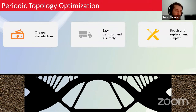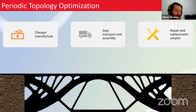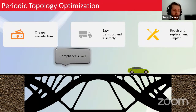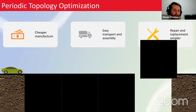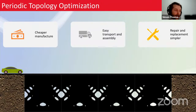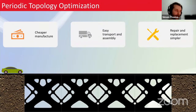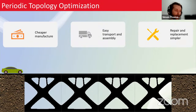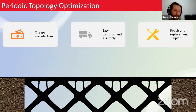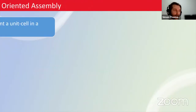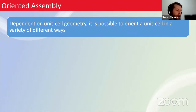Using typical single-component topology optimization, we get a very efficient structure — for example a compliance of one — but it's very difficult to manufacture. So we might use periodic optimization to construct a four-by-one bridge structure, sacrificing some efficiency in return for manufacturing benefits. In this case, compliance is raised to 1.5, but the repeated unit cells give a better manufacturing outlook.